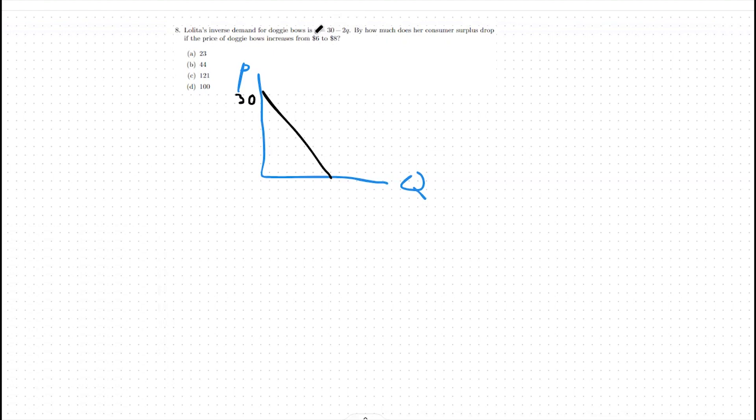If we then zero out our price, we can find our x-axis. So we can say 0 is equal to 30 minus 2q. So 2q equals 30. Our quantity on the x-axis for this demand curve would be 15.